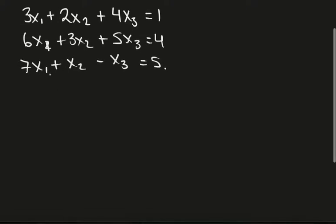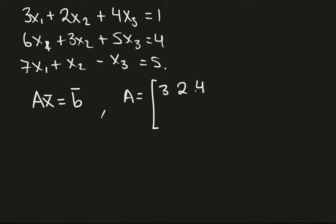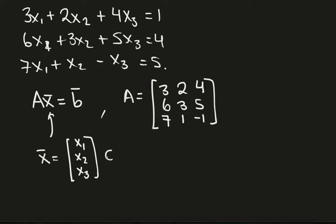This is a system of 3x3 linear equations, and we can write this in matrix form as Ax equals b. Here the matrix A is going to be 3, 2, 4, 6, 3, 5, and 7, 1, negative 1. This vector x, keeping everything very concrete, is just x1, x2, x3, a vector in R3, and the vector b is 1, 4, 5.